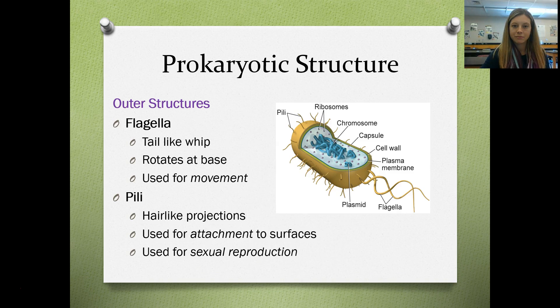Two of those structures are really unique. Some bacteria have a flagella, which acts like a tail-like whip — it rotates at the base and whips around, allowing them to move. Some bacteria also have little hair-like projections called pili, which are used for attachment and for reproduction.